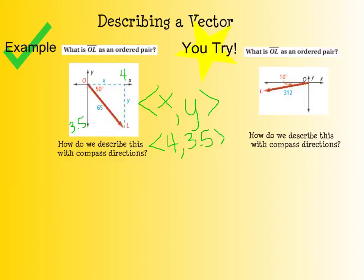How do we describe this with compass directions? What I'm going to do is look at my angle and figure out which direction I'm going: north, south, east or west. Just a reminder: north, south, east, and west. If you look, my example here is in between south and east.